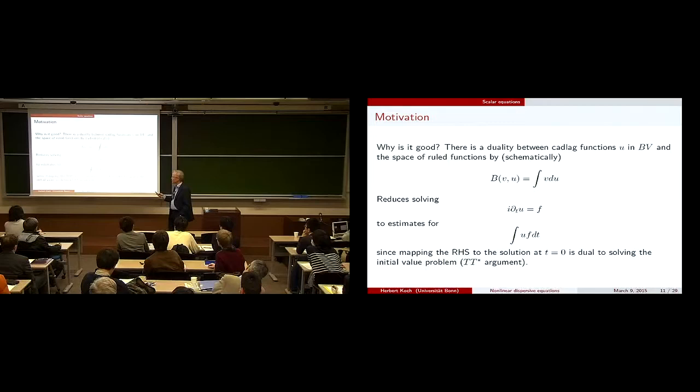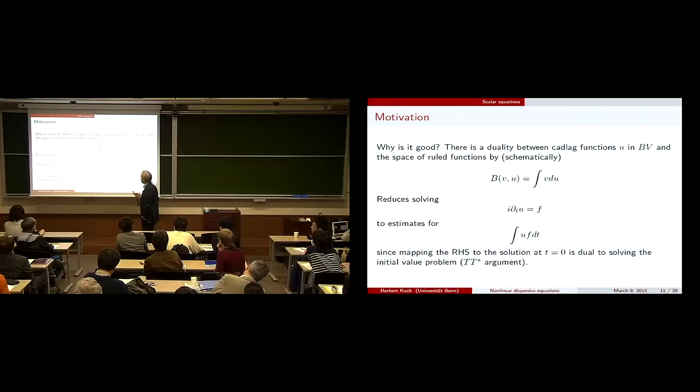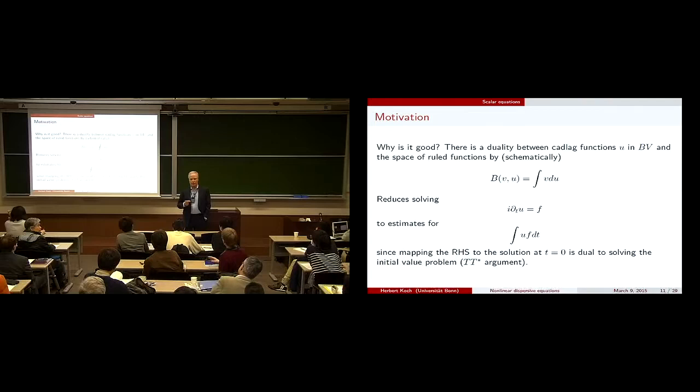If you have a regulated function and bounded variation, at least schematically, there are some duality relations of that type. So does this mean that they are not only a pairing but also one is the dual of the other with respect to this pairing? That requires proper definitions. But with proper definitions, this is true.